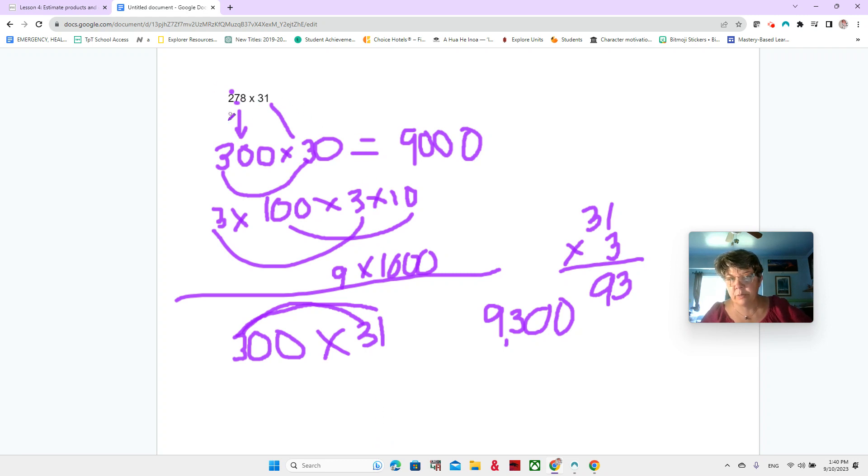Well, here we rounded this one up, but we rounded this one down. Here, we didn't round this one up. So this one is probably greater. And this one might be less than. Well, the actual answer is 8,618. So both of them are greater. But they are both also close estimates. 9,000 and 9,300 is close to 8,618.